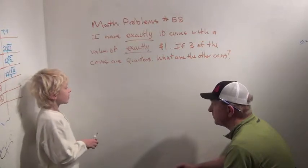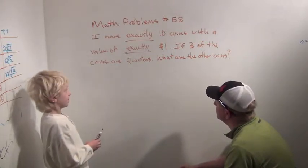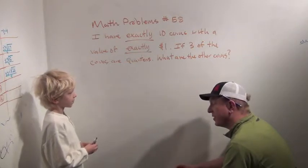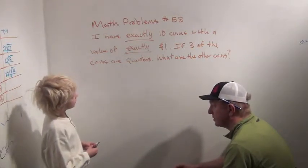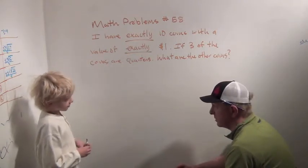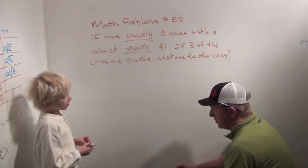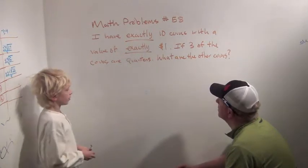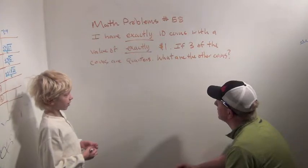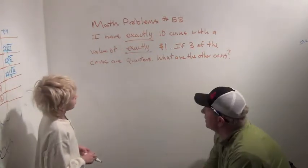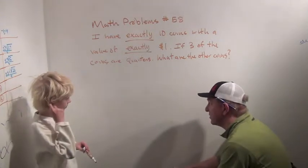Okay. We know we have to make 25 cents with seven coins. How'd you figure that out? That's really important. Because ten minus three is seven, and three of the coins are quarters. And we need to make 25 cents, because that's what the quarter value is, and four quarters make a dollar. Very good. Good reasoning. I like that reasoning. So we've got to make 25 cents with seven coins.